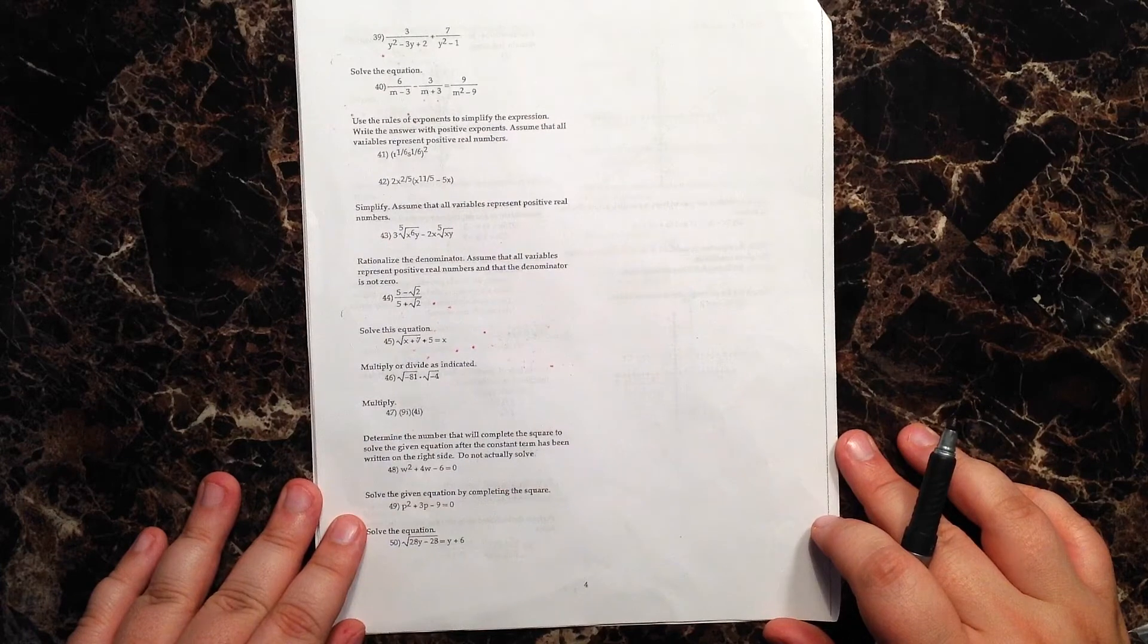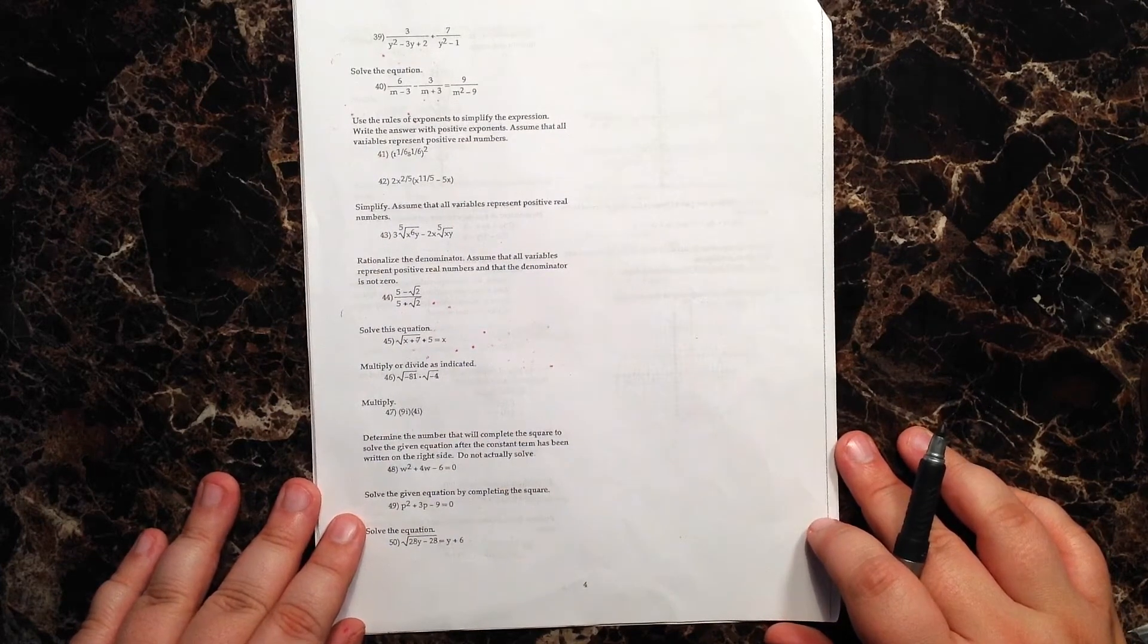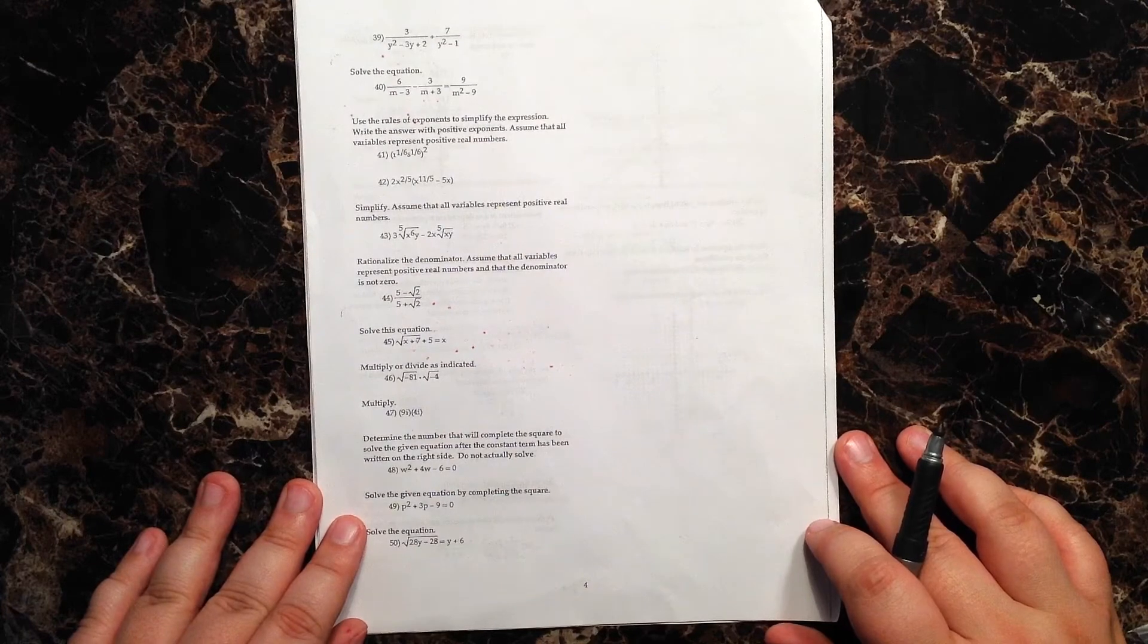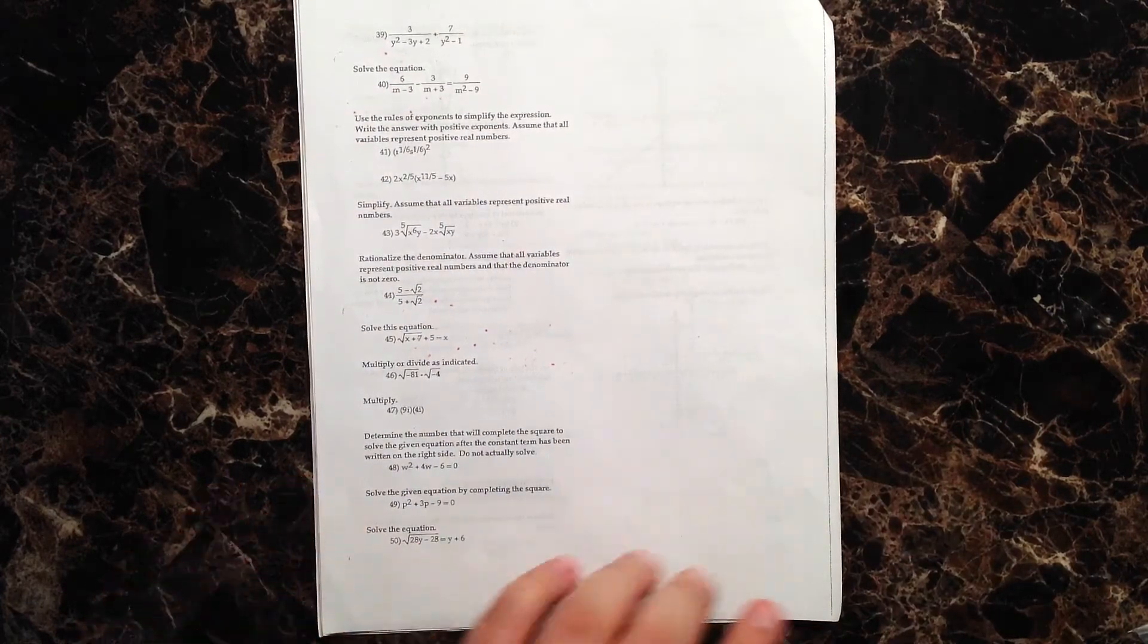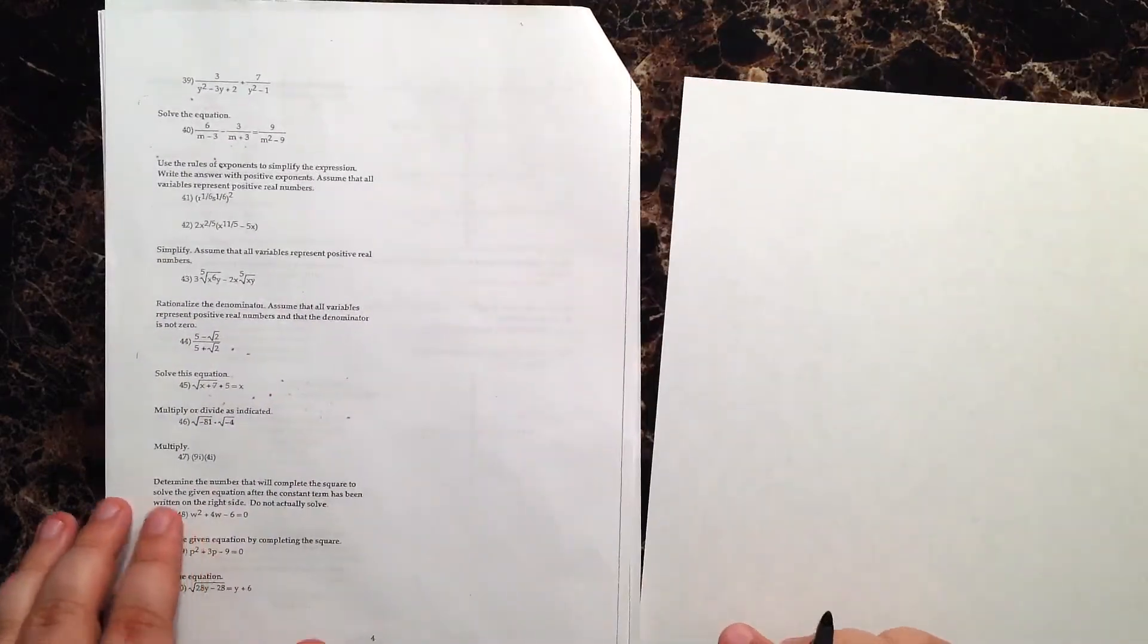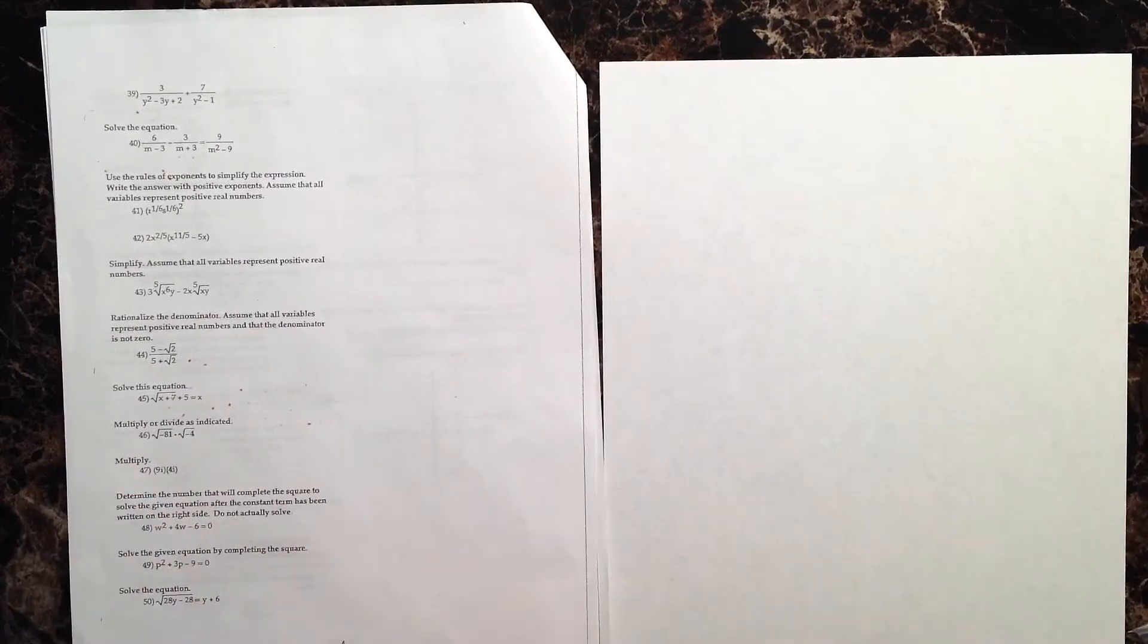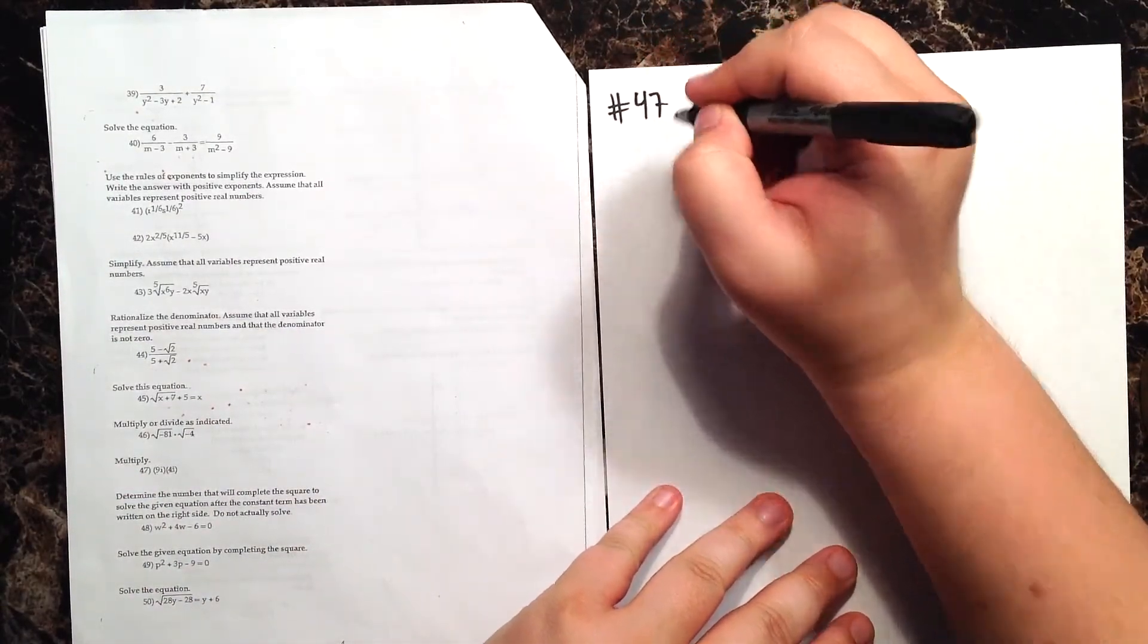Hello and welcome back to the intermediate algebra final exam review series. This is Joe Brownley with Palm Beach State College. We are on question number 47. I think we're in the home stretch here. The directions for number 47 are simple: multiply. All right, that's easy enough. Let's see what they want us to multiply.